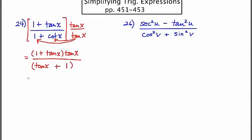So you may notice that I have one plus tan x over tan x plus one. It's the same thing. One's written the reverse direction of the other, but they're the same thing. It's like three plus four and four plus three. They can be canceled out, and you're simply left with tan x.